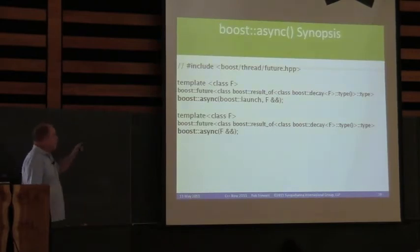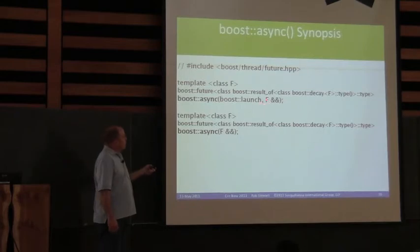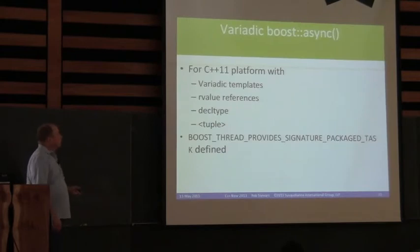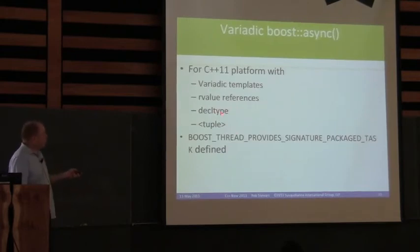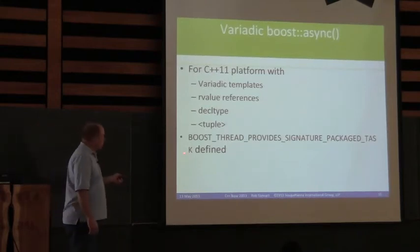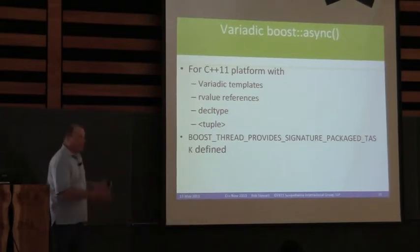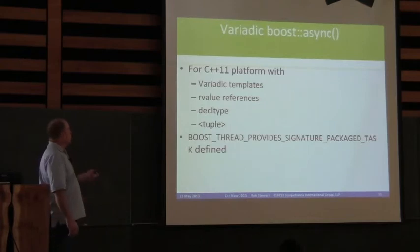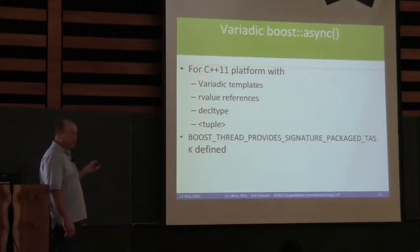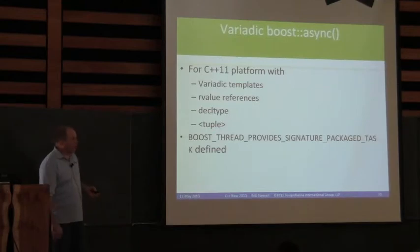Boost::async has a couple of differences. Notably there are no variadic arguments by default. If you then jump through a few hoops — specifically, you have to define BOOST_THREAD_PROVIDES_SIGNATURE_PACKAGED_TASK — and if your platform supports all of these things, then you get variadic support with boost::async.